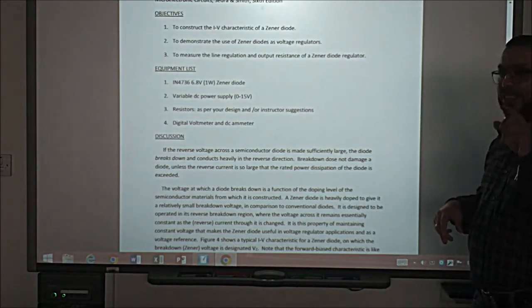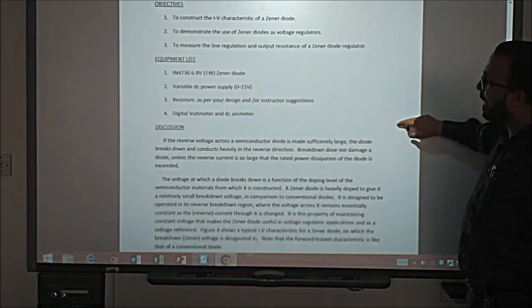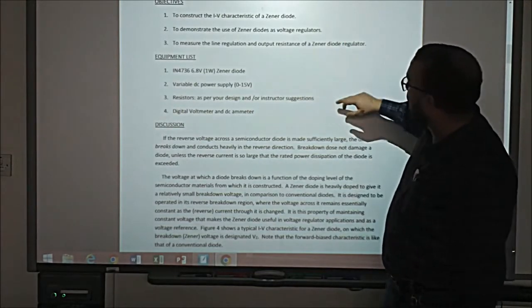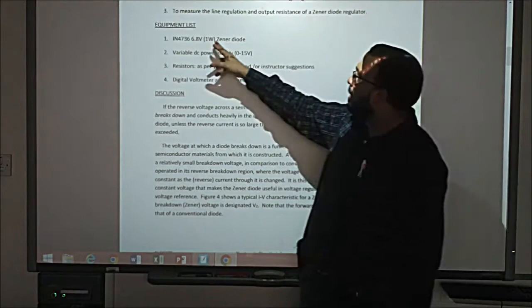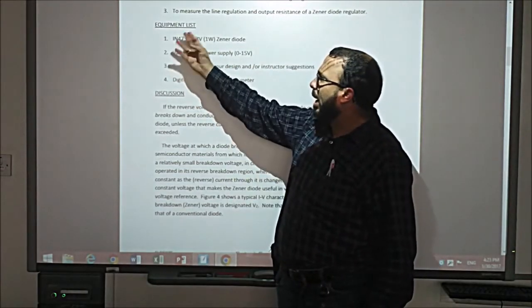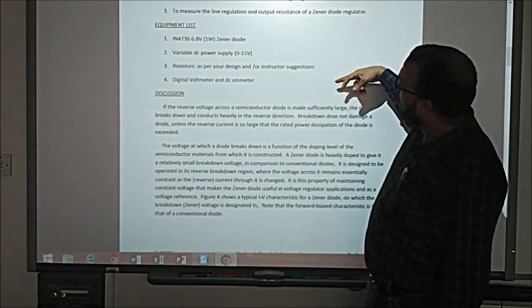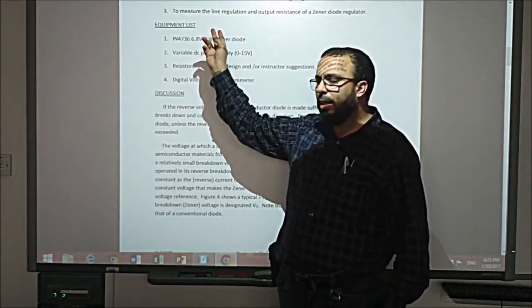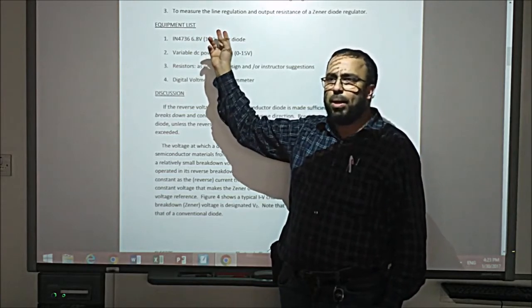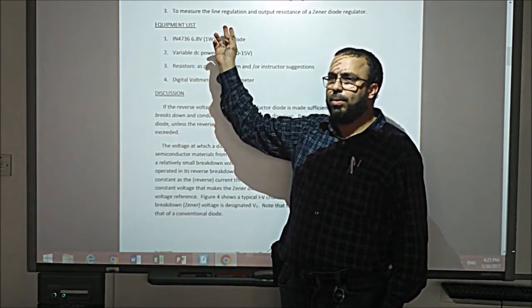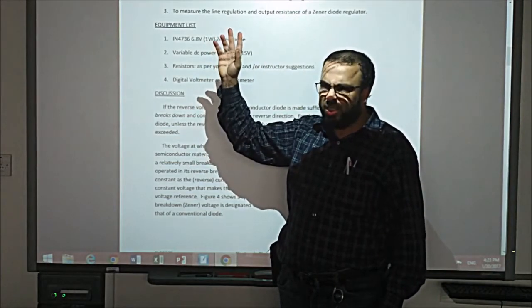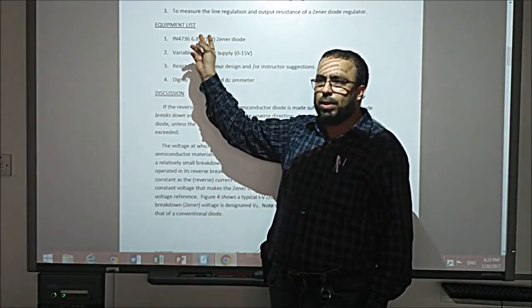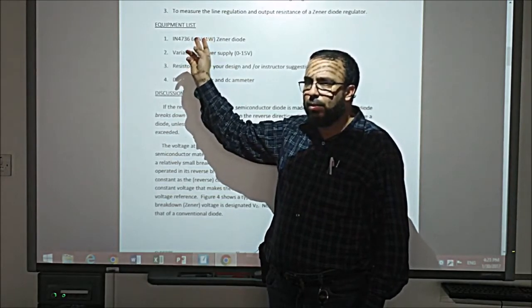We will talk about what's the model of the Zener diode in the breakdown. The equipment list: this is the Zener diode we are going to use, the 1N4736, 6.8 volt. That's basically the voltage. And the power here is the rating power, 1 watt. That means we should not exceed this power. If it exceeds, we are going to burn it. And this is the Zener voltage, the knee voltage.